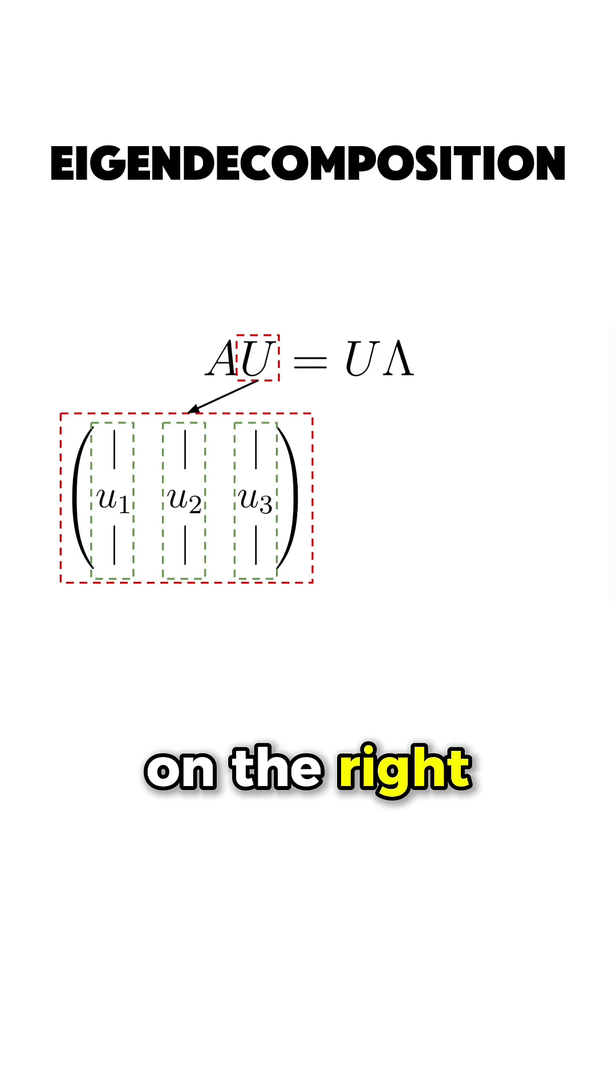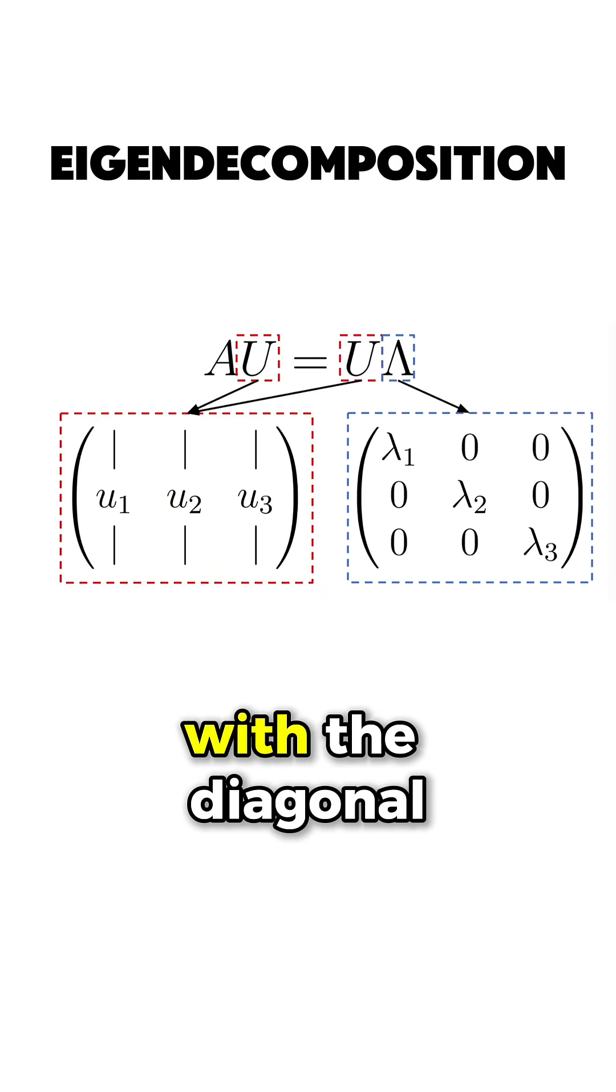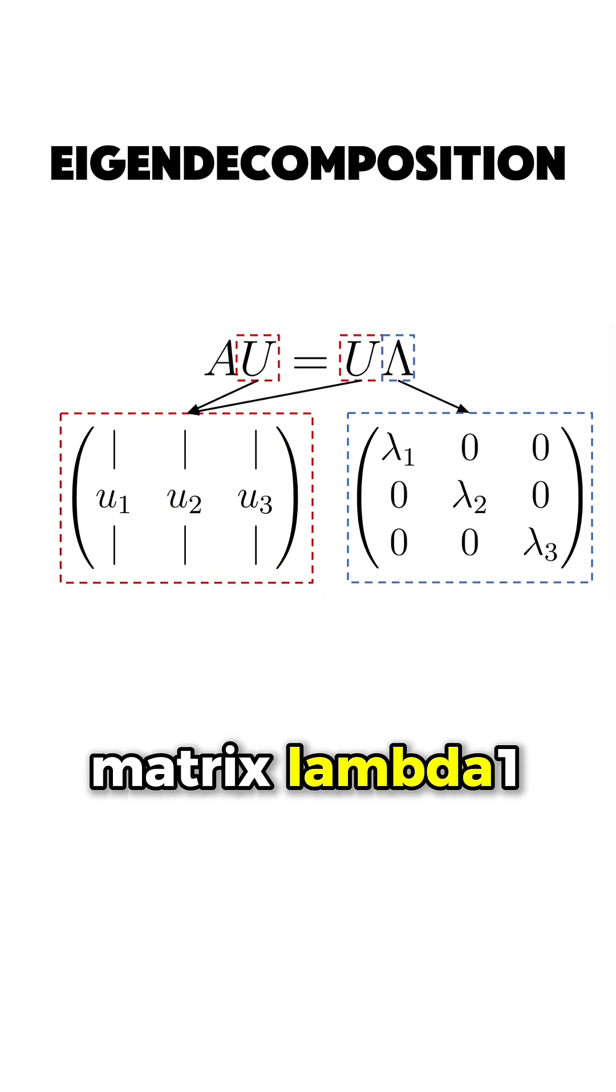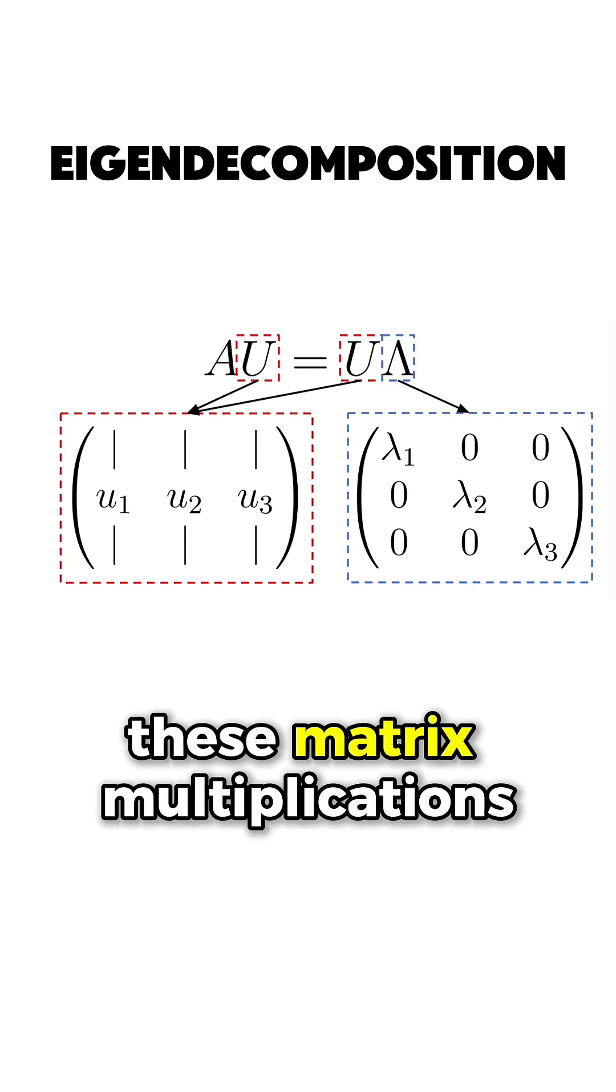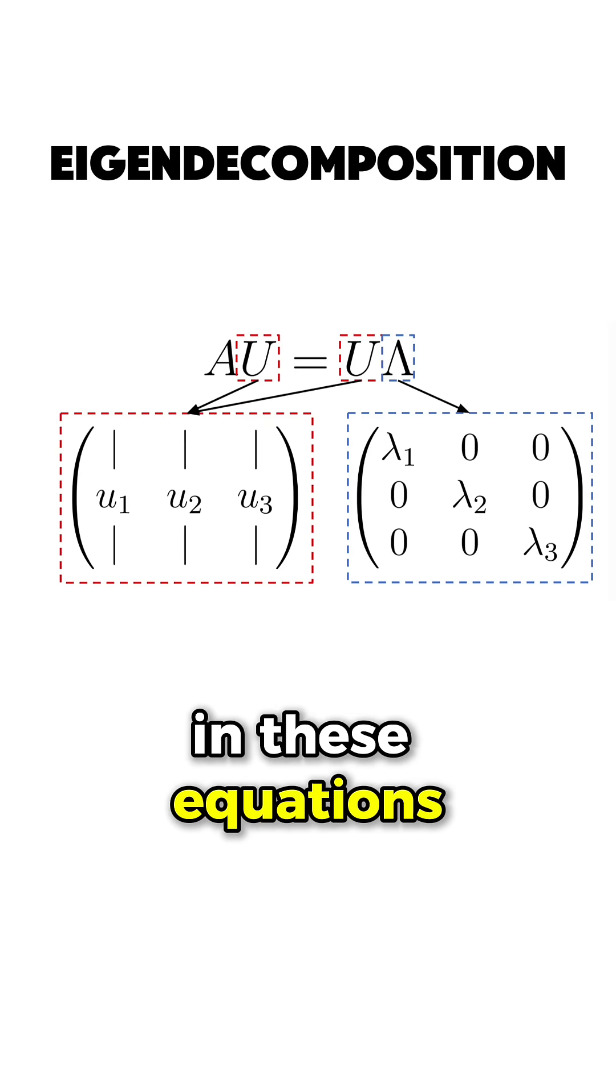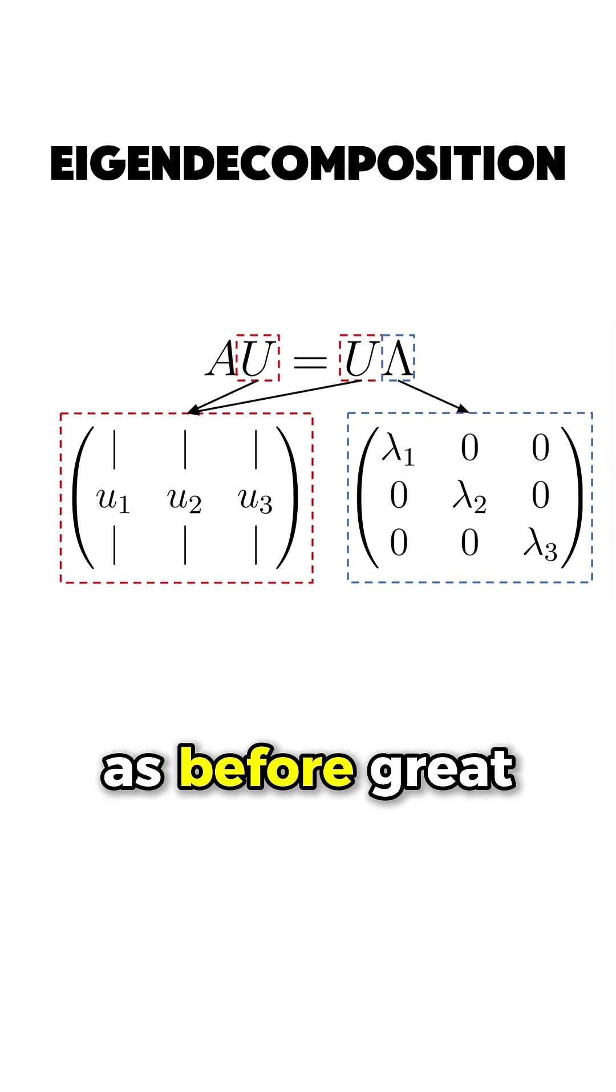We can do the same thing on the right side of the equation. We put the eigenvectors in their own n by n matrix, and multiply it with a diagonal matrix lambda 1, lambda 2, and lambda 3. If we were to perform these matrix multiplications, we would observe that we get the same equations as before.